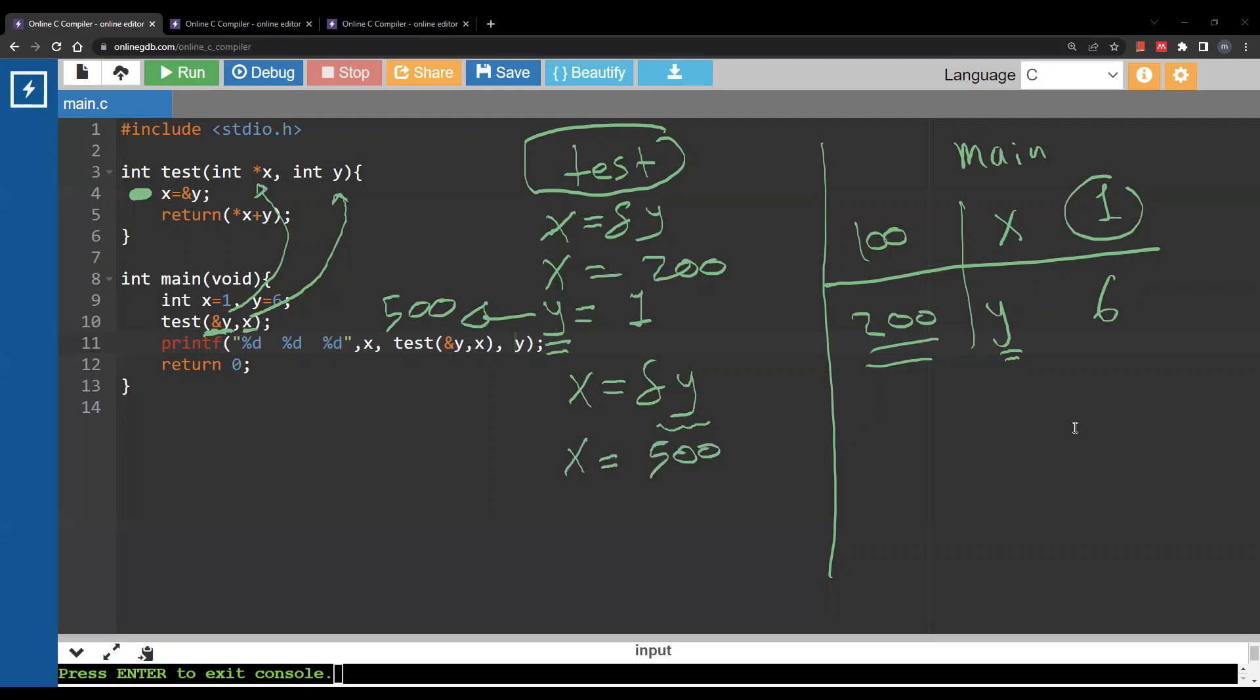Then I am returning star x plus y. So what is star x? Remember that x is now storing 500. So what is the variable that has the location 500 or the address 500? It is the variable y which has the value one. So star x in this case is just one plus y. What is y? Y is the same as star x, still one. So what is this? This is just two. What am I going to do with this two? Just return it.